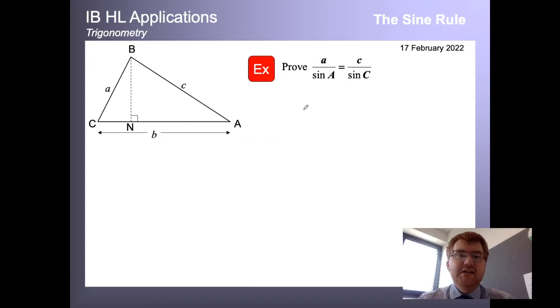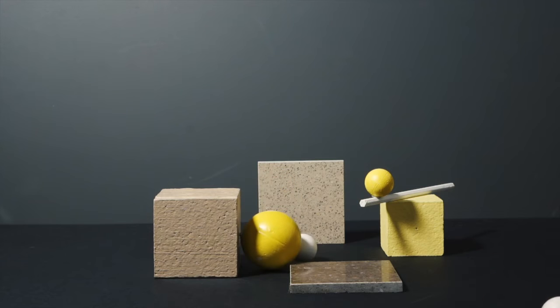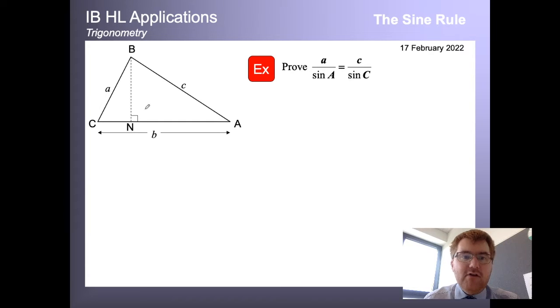Okay, so I've set up a random triangle here and I've just made one condition before I get started on proving why this actually works. Notice I've taken one of the random points, so B in this case, and I've dropped a perpendicular down. So this actually hits N here at a right angle. And I'm going to exploit that in order to actually show that A over sine A is equal to C over sine C.